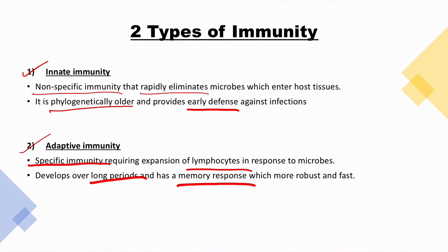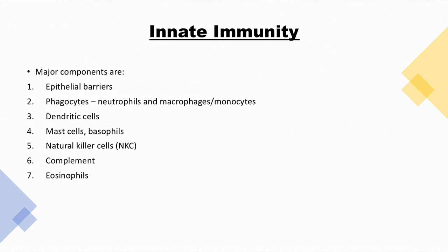I have marked four key points you should know regarding innate immunity and adaptive immunity. The major components of innate immunity include: epithelial barrier, phagocytes, dendritic cells, mast cells, natural killer cells, complement, and eosinophils.